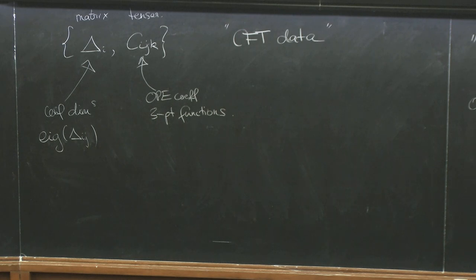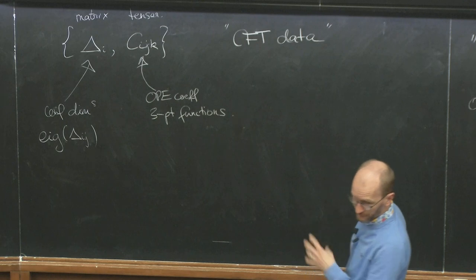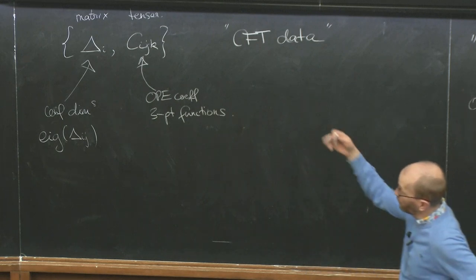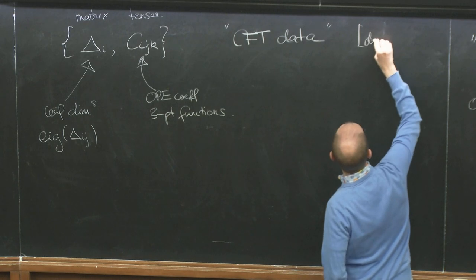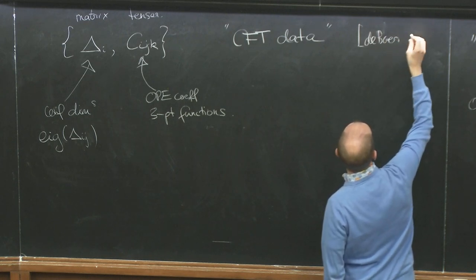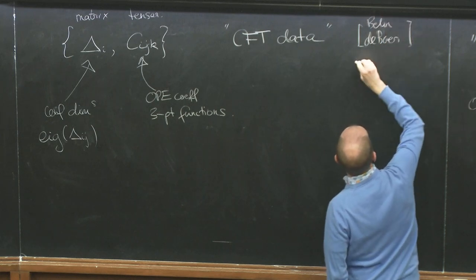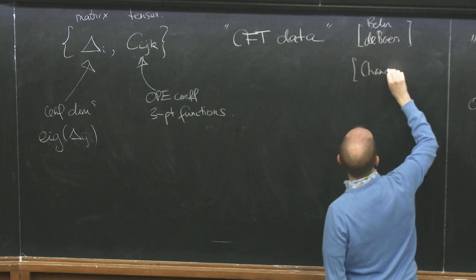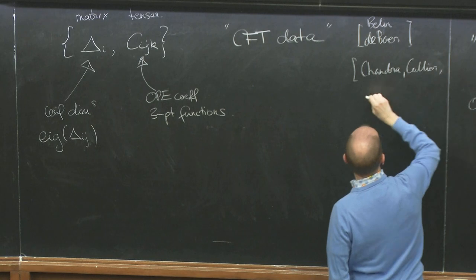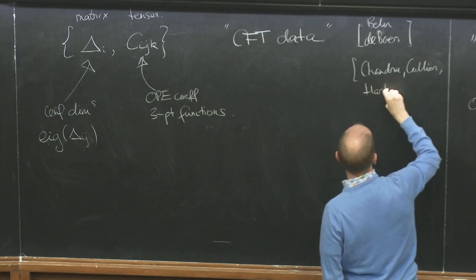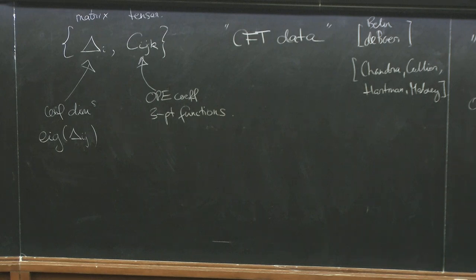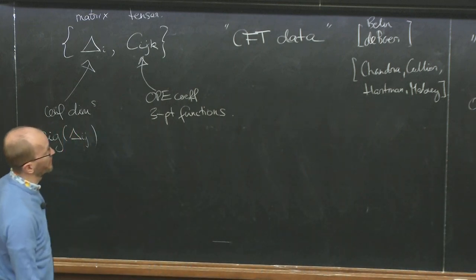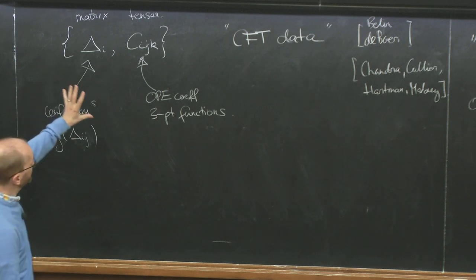The idea of treating all or some of this CFT data as random objects — I think was first really proposed by Belin and de Boer, and also by Chandra, Collier, Maloney, and Hartman. But what I'm about to say is a different perspective, and of course goes beyond what has been described in those papers. CFT data becomes a real CFT once you impose bootstrap constraints. The problem in this program of defining averages is that exact CFTs are very rigid objects — they don't allow averaging over a large space of CFTs, and typically don't have a large manifold of marginal directions you can integrate over.